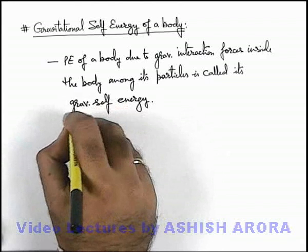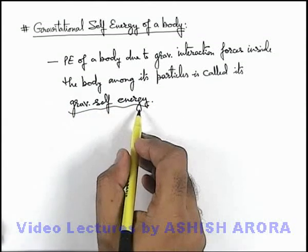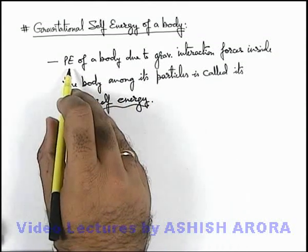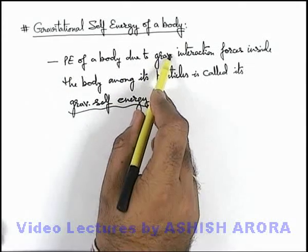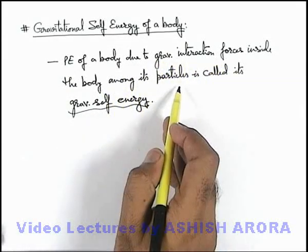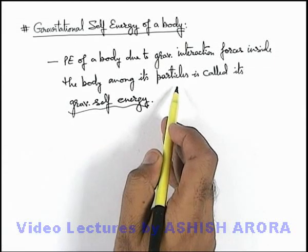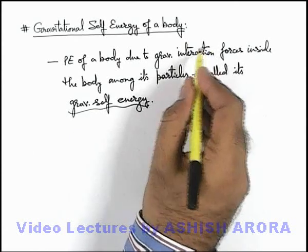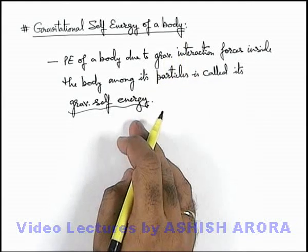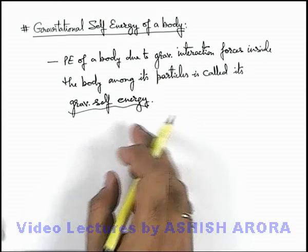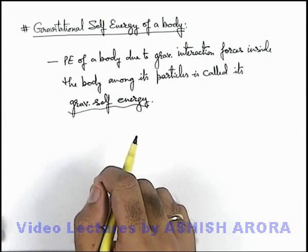So when we talk about gravitational self energy of a body, it is actually the potential energy due to the gravitational interaction forces inside the body among its constituent particles. Like we have discussed about gravitational potential energy for a two-particle or multi-particle system — that's due to the interaction force which exists between the particles, and the gravitational force due to which the body particles are bonded with each other is called gravitational self energy.